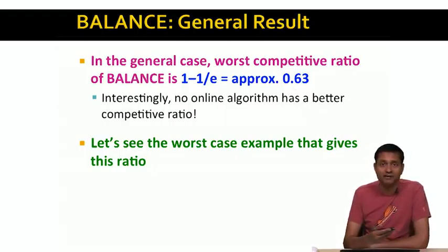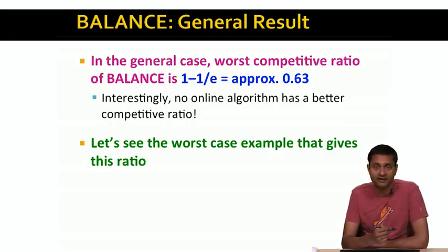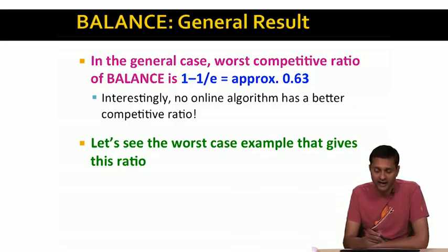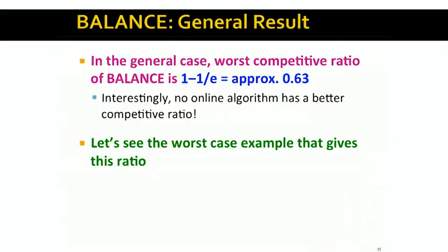So the balance algorithm does much better than the greedy algorithm in terms of competitive ratio. Interestingly, although I won't be able to show this in this lecture, no online algorithm can actually do better than this competitive ratio of 1 minus 1/e for the AdWords problem. But what I'm going to do instead is show you the worst-case example that gives us this competitive ratio of 1 minus 1/e.